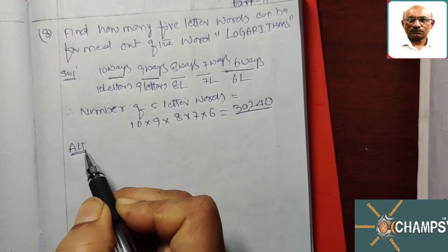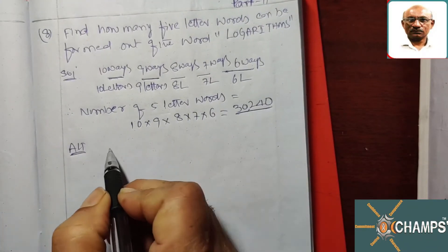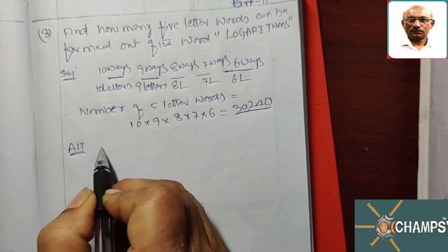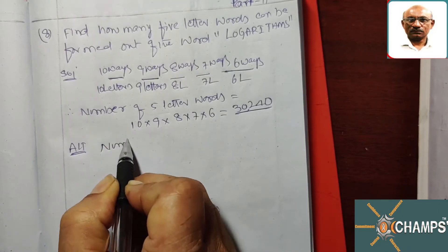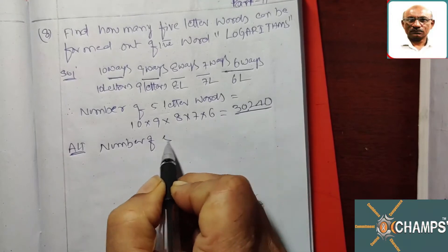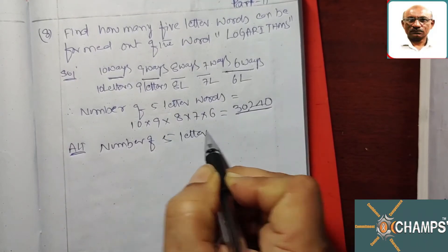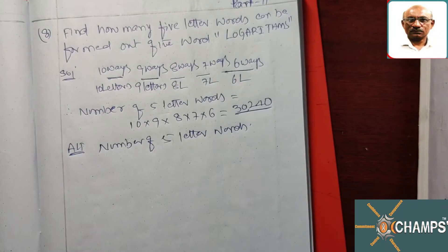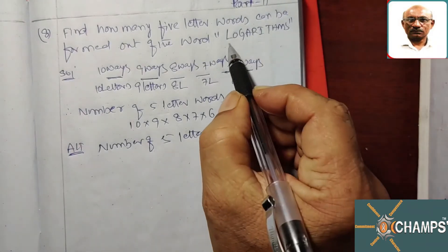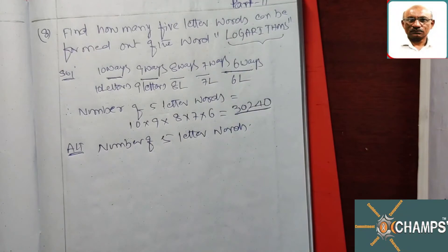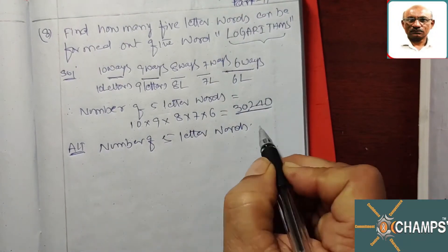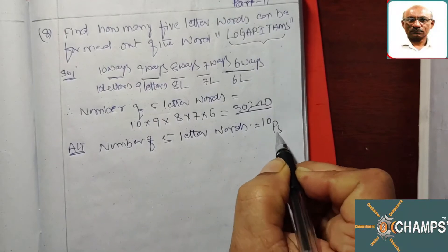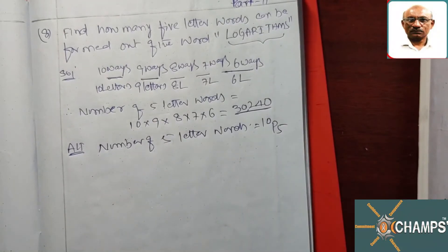Alternative way: word building is always arrangements. From 10 different letters, we have to take 5 letters for arrangement. So the number of 5-letter words is equal to 10P5. You can give the answer in this manner also.